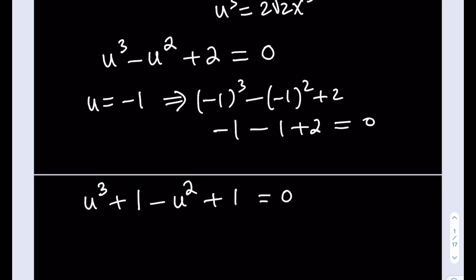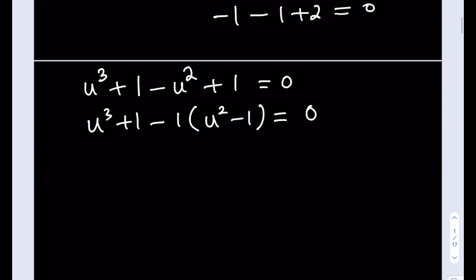So I'm going to be getting this expression, and this expression is meaningful because now if you take out a negative 1, you're going to notice that we get u squared minus 1 from here, which is difference of 2 squares. So I do have a sum of 2 cubes and a difference of 2 squares. Awesome. We're good to go. Let's go ahead and factor this.